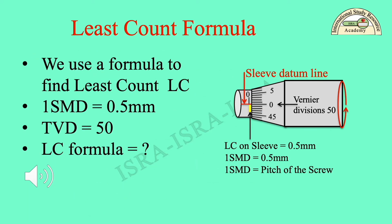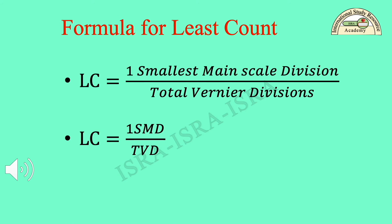Least count formula: we use a formula to find least count LC. 1 SMD is equal to 0.5 mm. Total Vernier division TVD is equal to 50. The least count LC formula is: LC is equal to 1 smallest main scale division over total Vernier division, or LC is equal to 1 SMD over TVD.